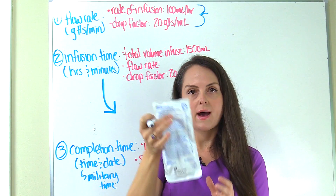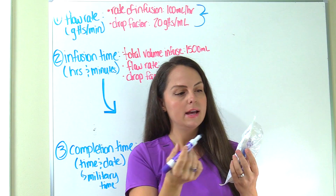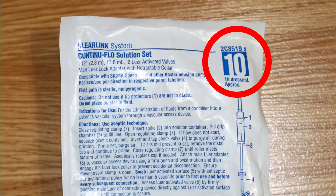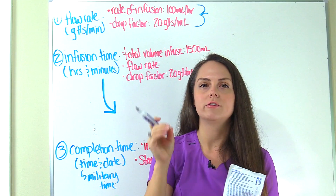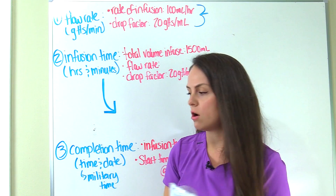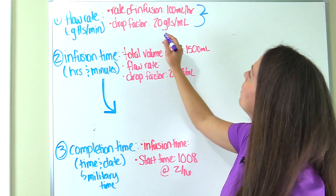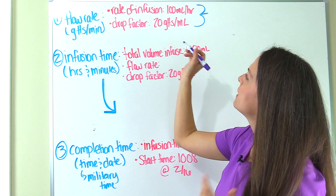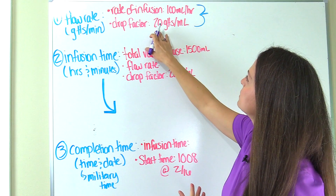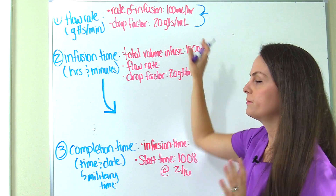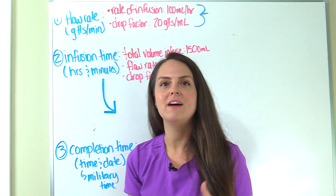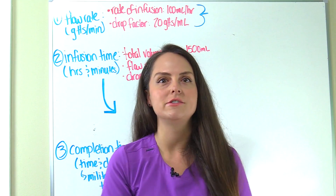For instance, on this bag right here, it tells me it has a drop factor of 10 drops per milliliter — so in order to equal a milliliter of fluid, this tubing set has to deliver 10 drops. In our problem, the IV tubing set we're using is going to deliver 20 drops for every milliliter. Now let's plug it in using our dimensional analysis.